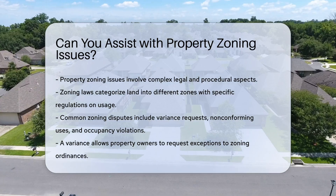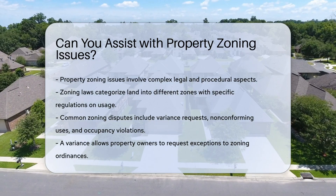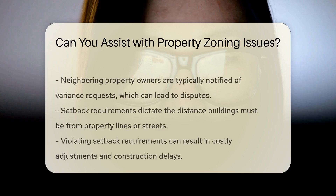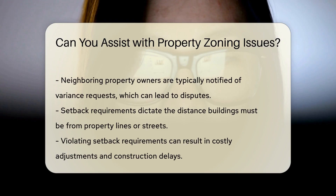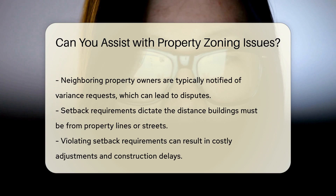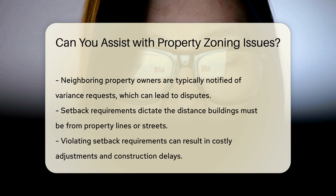Variance requests. If a property owner wants to use their land in a way that doesn't comply with the zoning ordinance, they can request a variance. Neighboring property owners are usually notified, and disputes can arise if they object to the proposed use.